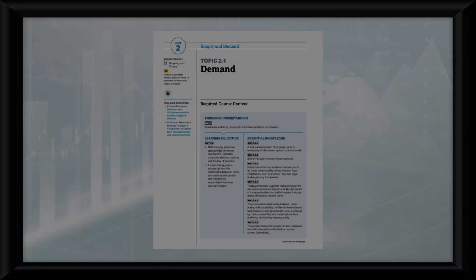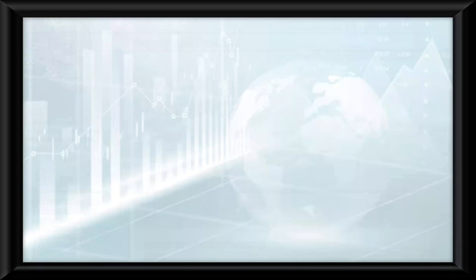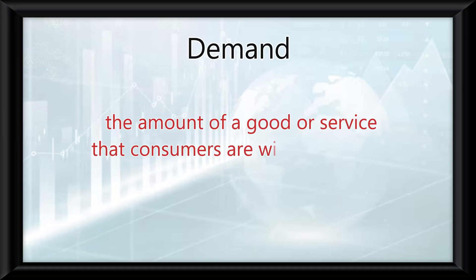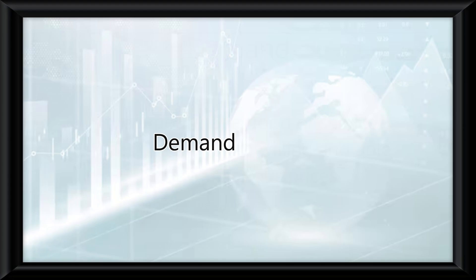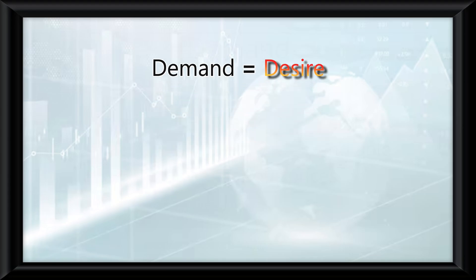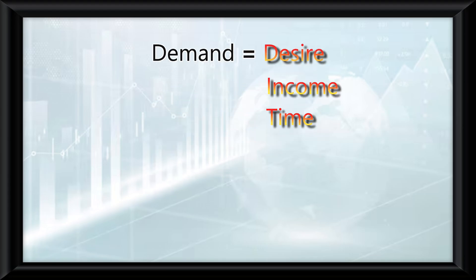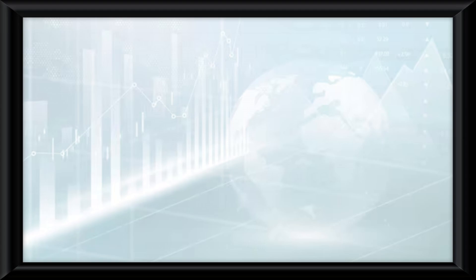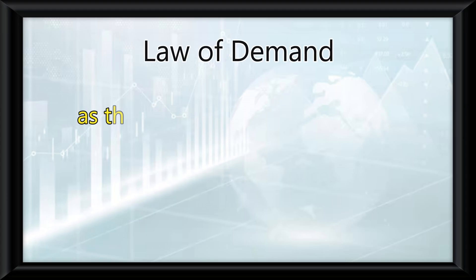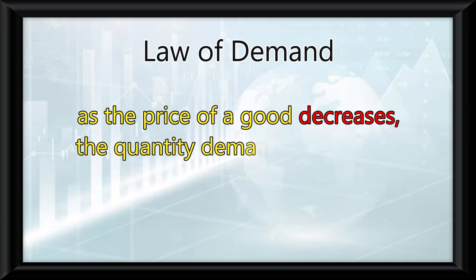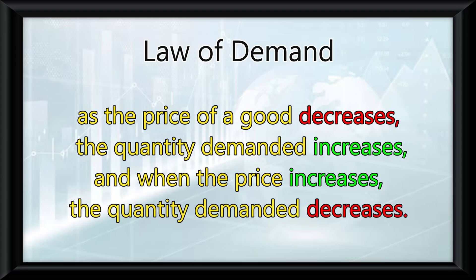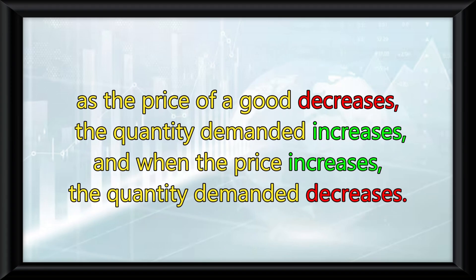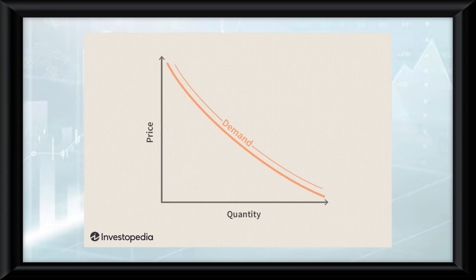Topic 2.1 is all about demand in economics. Demand refers to the amount of a good or service that consumers are willing and able to buy at various prices. It's important to note that demand doesn't just depend on desire — it also depends on constraints like income, time, or even legal regulations. The law of demand says that as the price of a good decreases, the quantity demanded increases, and when the price increases, the quantity demanded decreases. This inverse relationship is illustrated on a downward sloping demand curve.